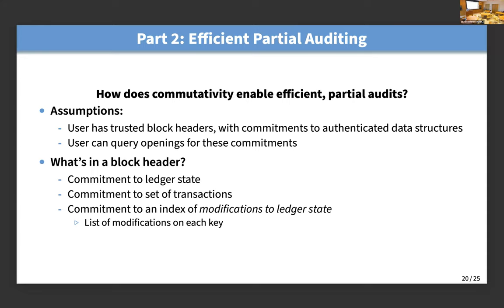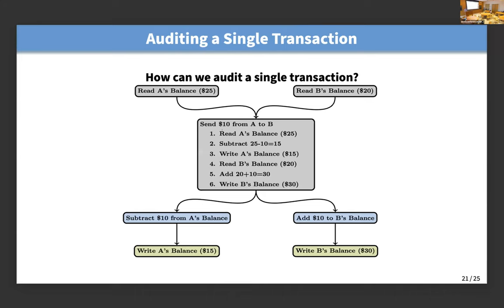So how do we audit a single transaction? On the read side, if you have a block header from the current block, you have the commitment to what it's reading, so you can query for the values that are read. You can also query to make sure that the output of a transaction is included in the modification list. If you have the block header for the next block, you can query for the value of the key in that next block. Then you check: does the state before, plus whatever modifications are in the commitment, equal the state after? That suffices to audit a single transaction.